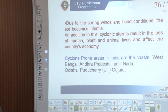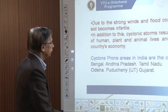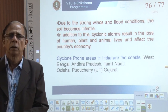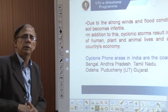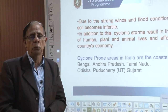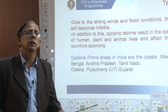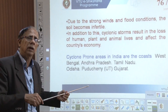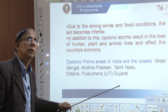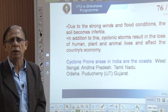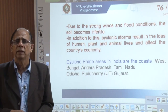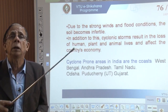Which are the cyclone-prone areas in India? West Bengal, Andhra Pradesh, Tamil Nadu, and Odisha are some of the cyclone-hit areas. Do we have any control over cyclone formation? No. But we can minimize the damage due to cyclones. One precaution is to construct permanent structures as far inside, away from the coast, as possible, since coastal areas are most vulnerable.